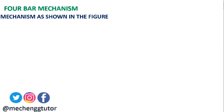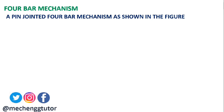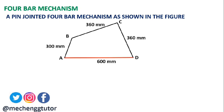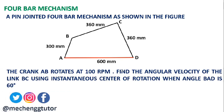The first case we shall take is the four-bar mechanism. The problem states: a pin-jointed four-bar mechanism is shown in the figure. AD is the fixed link at 600 mm, AB is 300 mm, BC is 360 mm, and CD is also 360 mm. The crank AB rotates at 100 rpm. Find the angular velocity of link BC using the instantaneous center of rotation when angle BAD is 60 degrees.